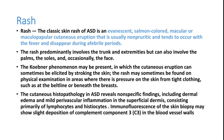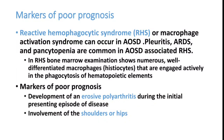Once we encounter a case of Adult Onset Still's Disease, there are markers of poor prognosis. Macrophage activation syndrome is very important and carries a very bad prognosis; patients can develop pleuritis, ARDS, and pancytopenia. Other markers of poor prognosis include erosive polyarthritis at presentation, and involvement of shoulder or hip joints. Patients with macrophage activation syndrome, erosive polyarthritis, or shoulder/hip joint involvement early in the disease all carry a poor prognosis.